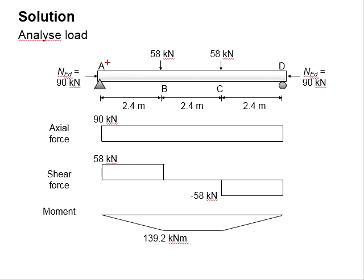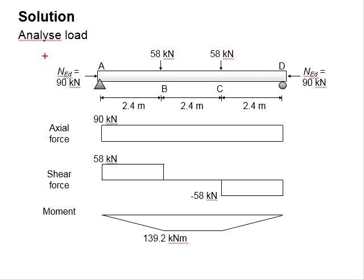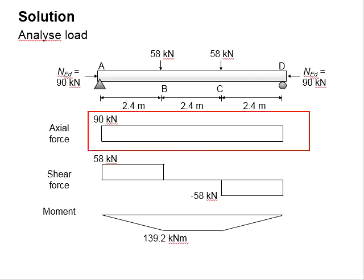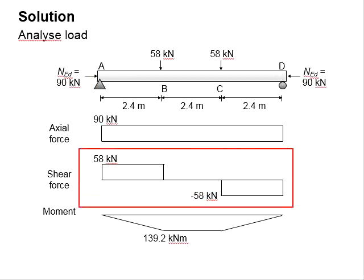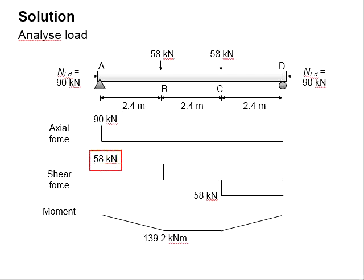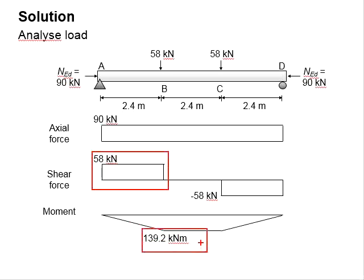To determine the loads, sketch the axial force, shear force, and bending moment diagrams. The member is subjected to an axial force of 90 kN, which is constant throughout the span. To determine the shear force diagram, first obtain the vertical reactions at A and D, then sketch the diagram accordingly. The maximum shear load is found to be 58 kN. To determine the bending moment diagram, obtain the areas of the shear force diagram, equivalent to the moment. The maximum moment is found to be 139.2 kNm.